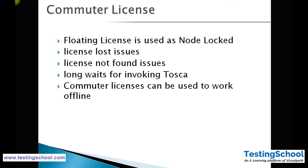Next is the Commuter License. When working on a floating license, you may encounter issues like 'license not found' or long launch times. A commuter license is essentially a floating license used as a node license — the floating license is installed on a host and you work offline. The advantage is that you avoid license-not-found and network issues.